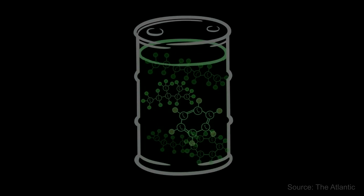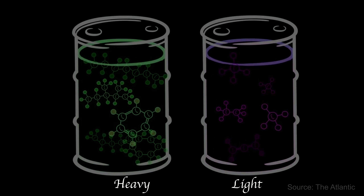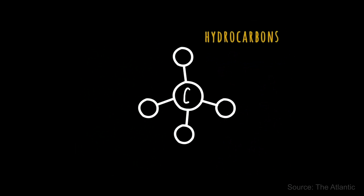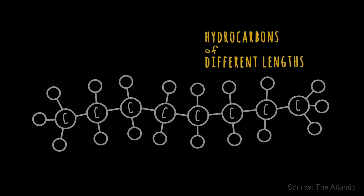Who says one plus one is two? It's not always, not at least in the oil industry. When one cubic meter of KB crude oil is blended with one cubic meter of condensate, the total volume will be less than two cubic meters. That means there will be some shrinkage due to the molecular size of each component.